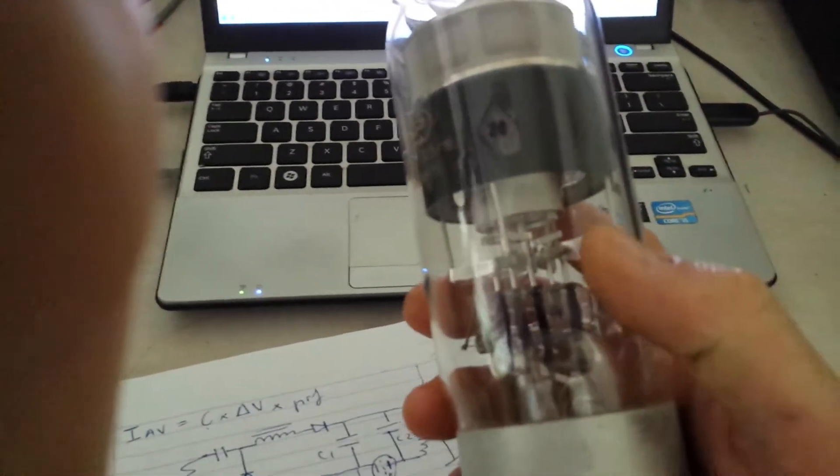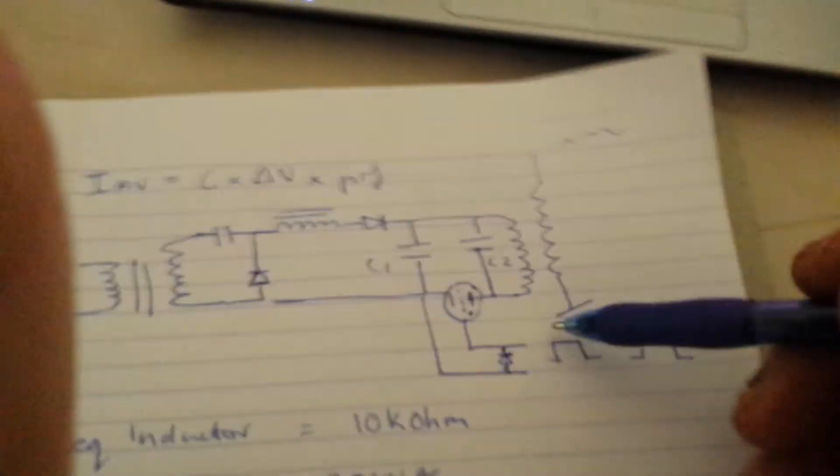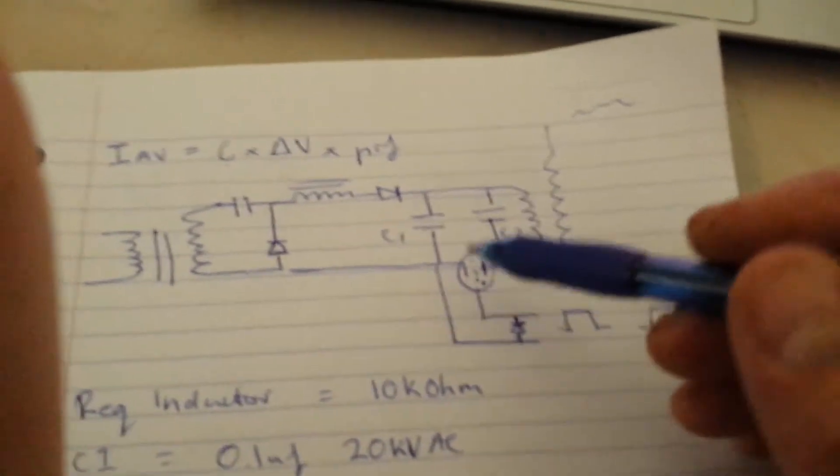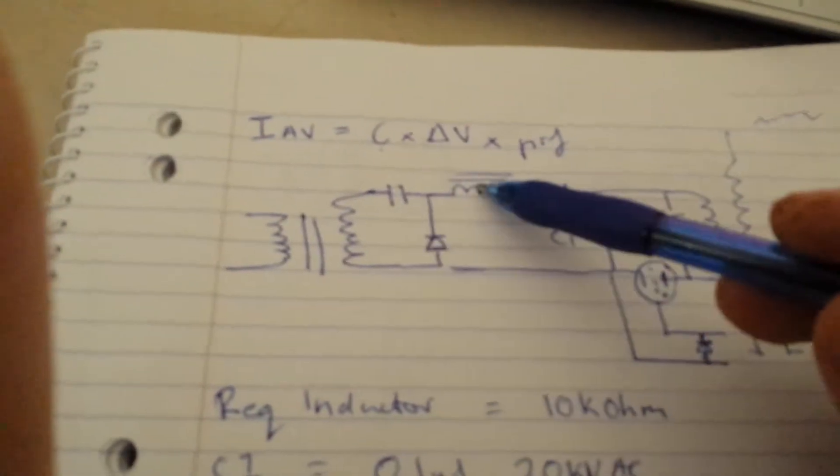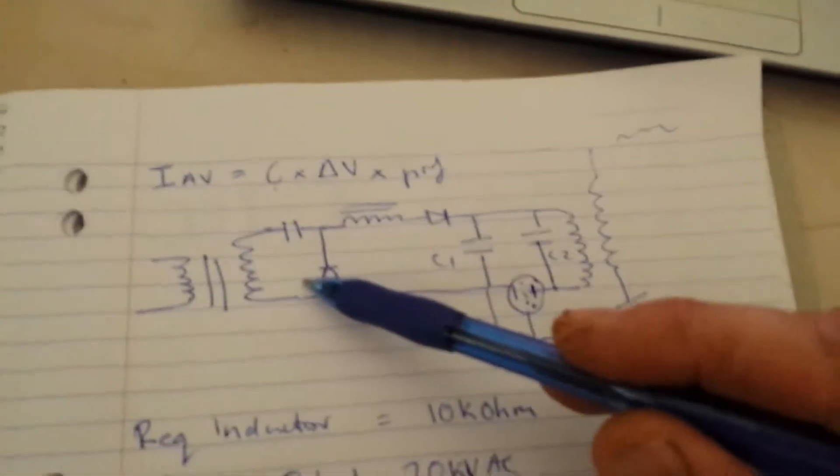And the only way I could stop it was with that reverse diode that I've got here. And that seemed to make it run really smoothly. Now, the reason why you use a charging choke is to limit the amount of current and also to double the line voltage.